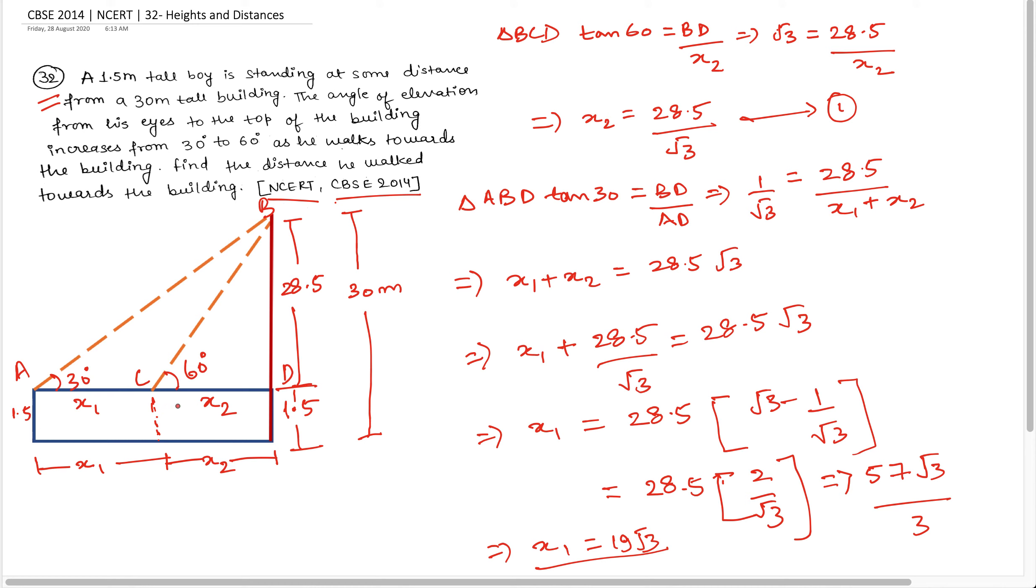तो अब देखे, यह जो distance यह बंदे ने travel किया है, find the distance he walked towards the building, यह जो x1 distance है जो यह बंदा चल कि इधर आया है, यह distance है 19 root 3.